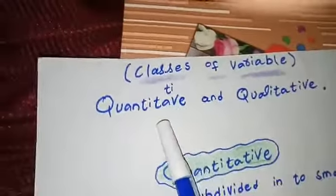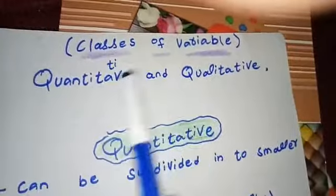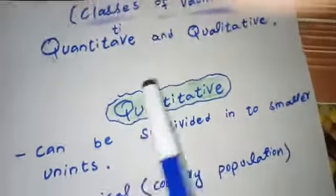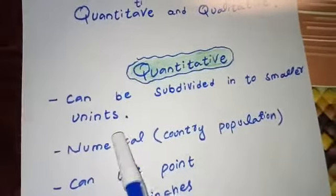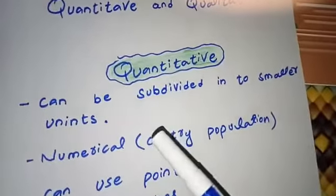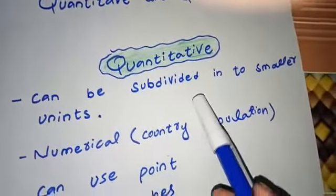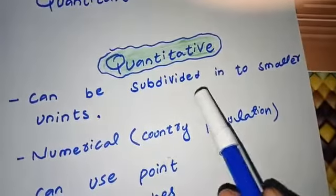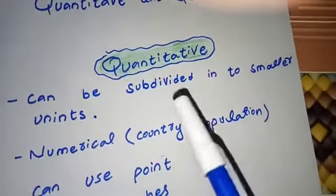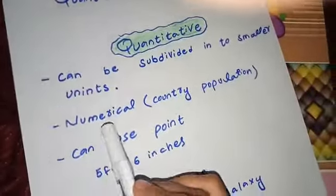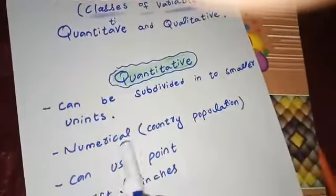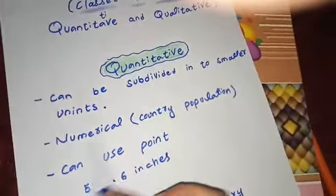The next topic is the classes of variable. There are two main classes: quantitative and qualitative. Quantitative variables can be subdivided into smaller units — for example, your height of six foot five inches can be further subdivided into millimeters or centimeters. Quantitative variables are always in numerical form, whereas qualitative variables are not in numerical form.